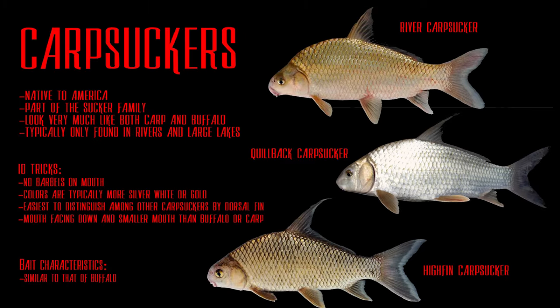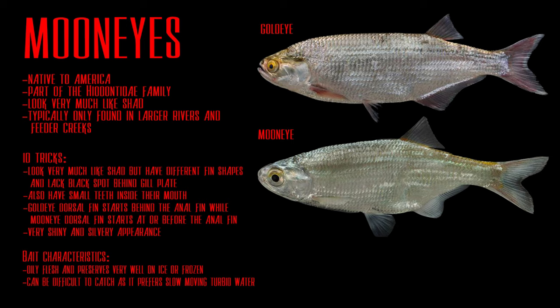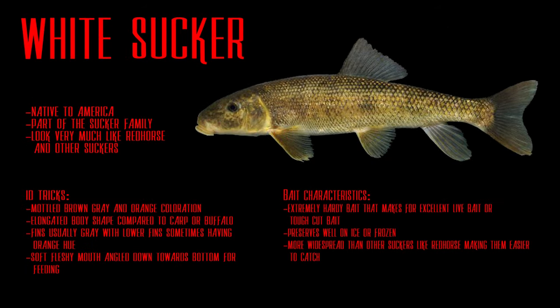There are several other fish I didn't cover in detail, like carp suckers — there are three kinds: river carp sucker, highfin carp sucker, and the quillback. These are very difficult to tell apart from each other, but you can differentiate them from buffalo by their smaller mouths and more white coloration. They're also part of the sucker family. I use them when I catch them, though I don't catch them often. There's also mooneye and goldeye — I've heard they're real good baits, very oily like shad and skipjack. Occasionally I'll catch white sucker and use those too.